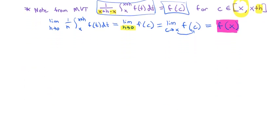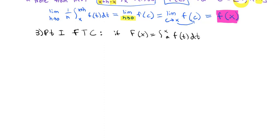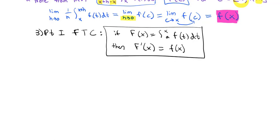Let me summarize that. This is part one of the Fundamental Theorem of Calculus: if capital F(x) equals the integral from a to x of f(t) dt, then the derivative F prime of x is simply equal to f(x) — the inside function. Part one says the derivative is the opposite of the integral; the derivative gets rid of the integral.